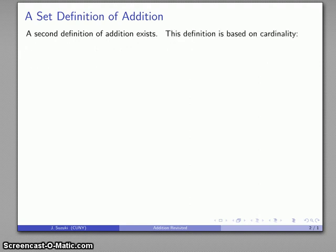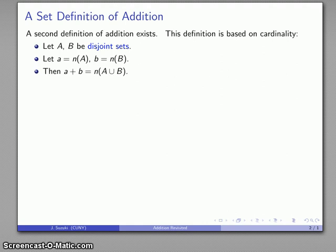So the second definition is based on our concept of cardinality, and so the idea is I'm going to let A and B be disjoint sets, that is to say these are sets that have nothing in common. I'm going to let a be the cardinality of the set A, I'm going to let b be the cardinality of the set B, and I'm going to define a plus b to be the cardinality of the union of the two sets.